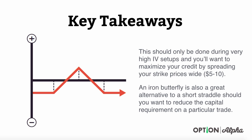Takeaways for this strategy: this should only be used during very high implied volatility setups — that's where you get the benefit and the edge in the market. You'll want to maximize your credit by spreading your strikes wide, typically $5 to $10 wide. An iron butterfly is also a great alternative to a short straddle because it reduces your capital requirement dramatically while also reducing your overall risk. We really like this type of strategy during high implied volatility setups like we just saw in GLD. As always, I hope you guys enjoyed this video — if you have any comments or questions, please add them below, and until next time, happy trading.